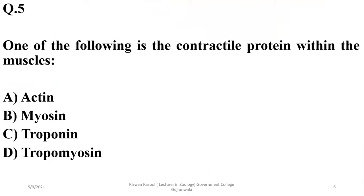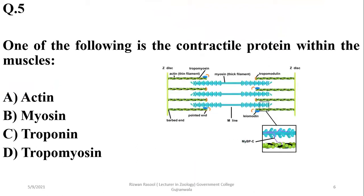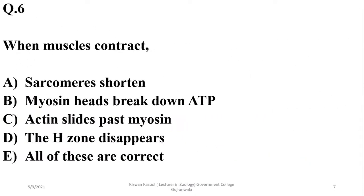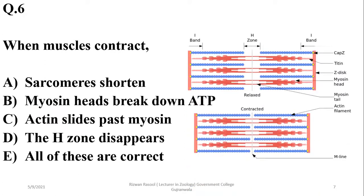One of the following is a contractile protein within the muscles — it is myosin. When a muscle contracts, the sarcomere shortens. Myosin heads bind to actin, the H-zone disappears, and Z-lines come closer. All of these are correct statements for muscle contraction.